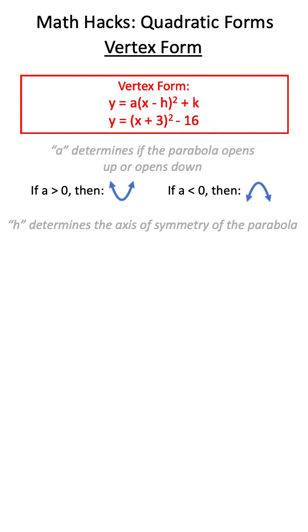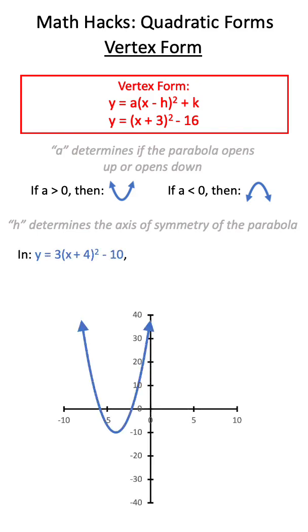In addition, h will give us the axis of symmetry of our parabola. Now it's important to note that h is negative in vertex form, so we have to change the sign. So in an equation like this, the axis of symmetry would be x equals negative 4.